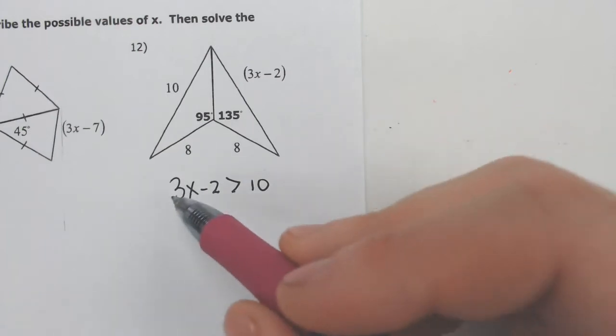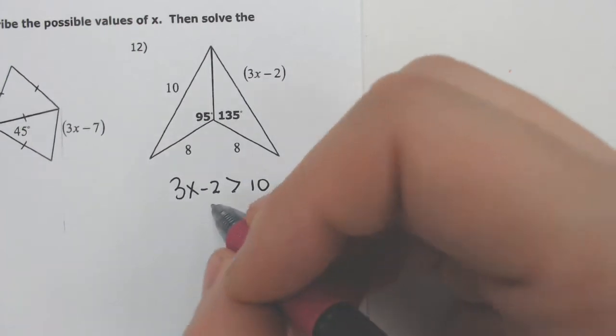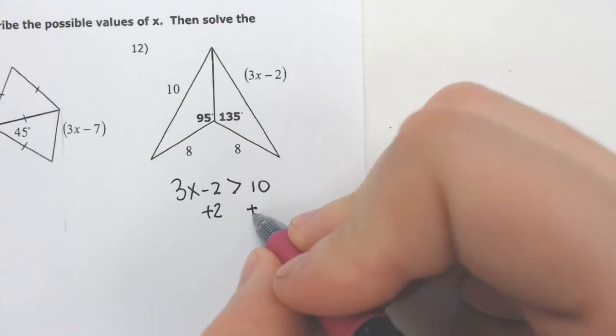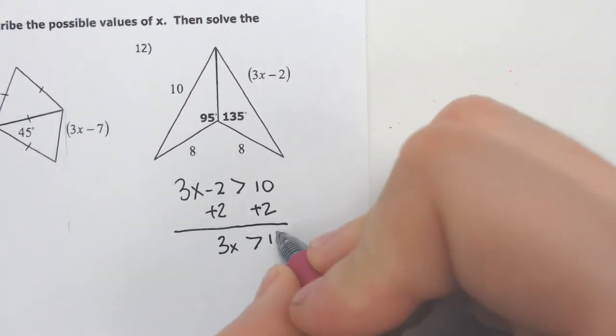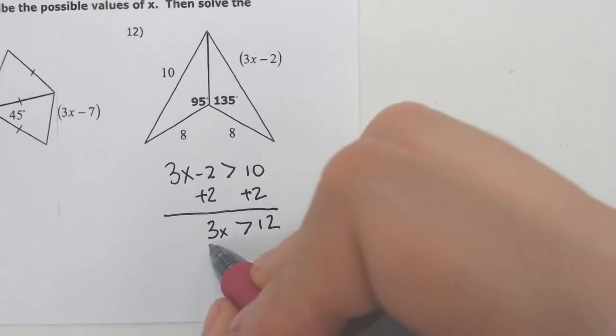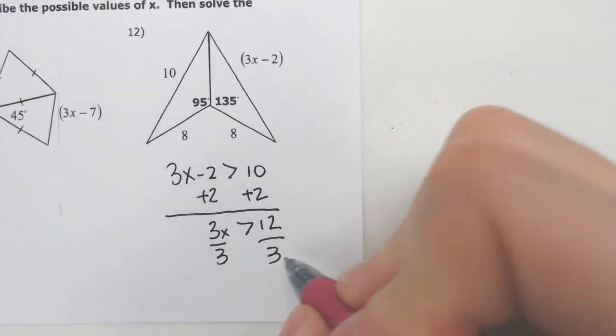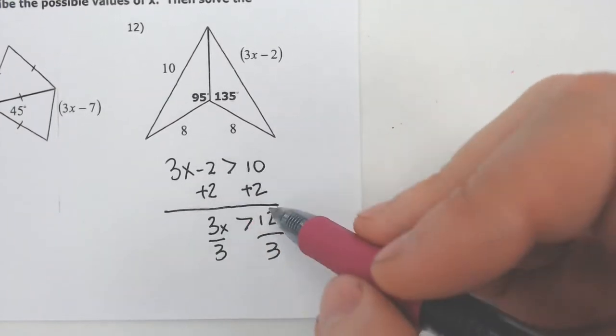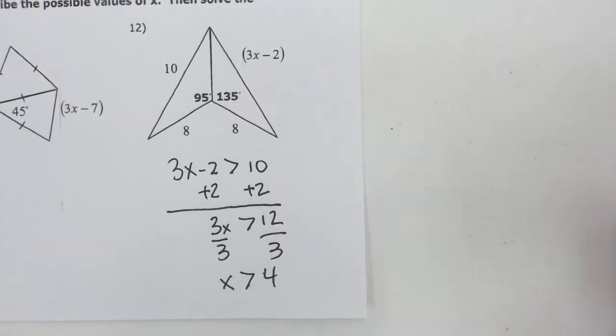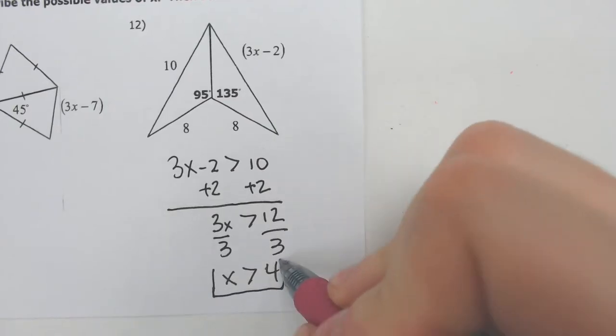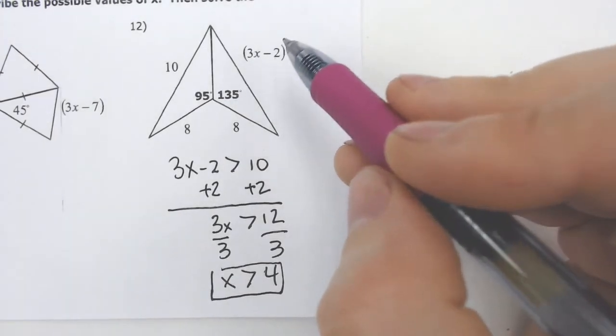You could have written 10 is less than 3X minus 2. I like writing the Xs first, so that's what I did. But then you just solve. Make sure if you divide by a negative with inequalities that you flip the inequality symbol. Doesn't happen too often, but it does occasionally happen. I'm continuing to solve. I added 2 divided by 3. X has to be greater than 4. And that's it for solving, as long as you're solving for the sides.